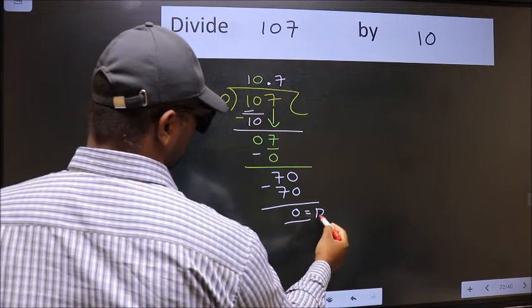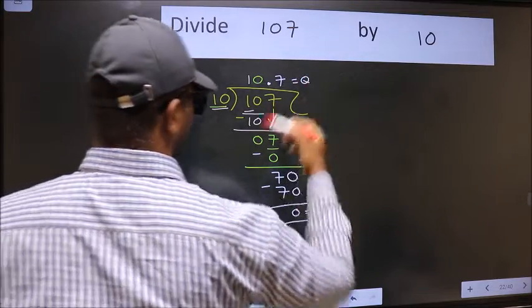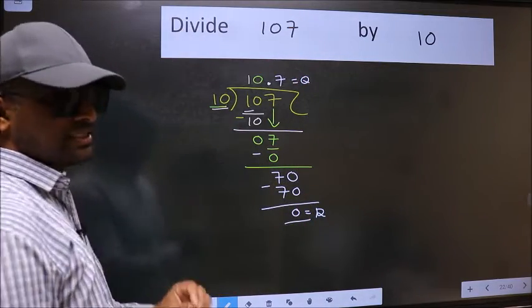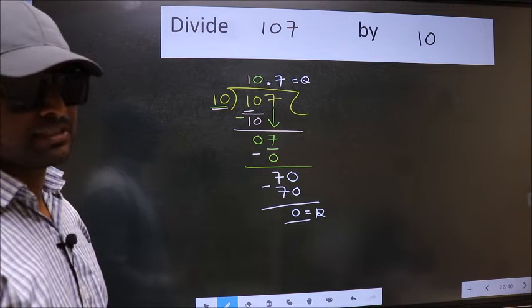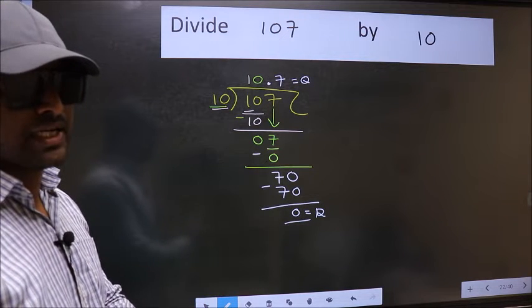This is our remainder and this is our quotient. Did you understand where the mistake happens? You should not do that mistake.